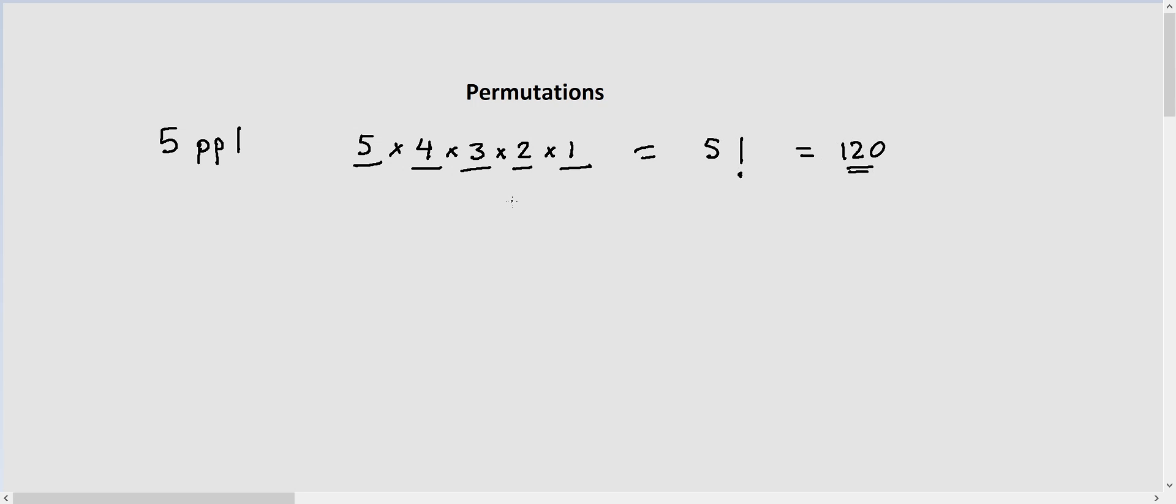This was the formula for the factorial. Now in permutation, instead of five seats we actually have a lesser number of seats, so I'll call it three seats. What will happen if we have three seats?